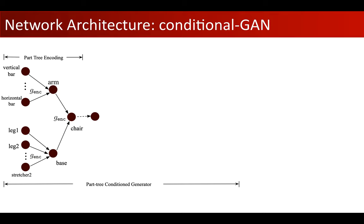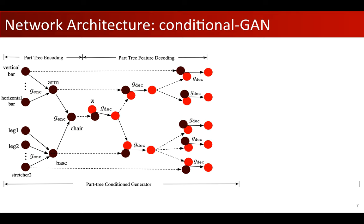Then, given a random variable z, a top-down decoding procedure propagates the geometry information along the hierarchy, and finally generates part point clouds for leaf nodes.